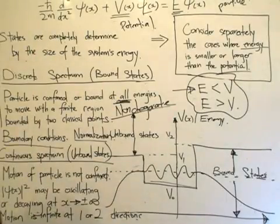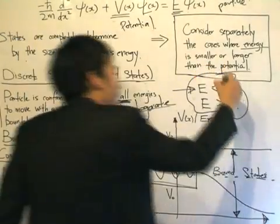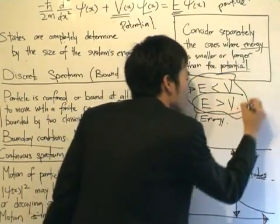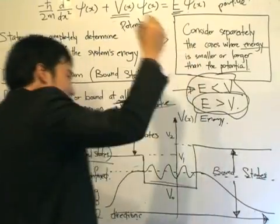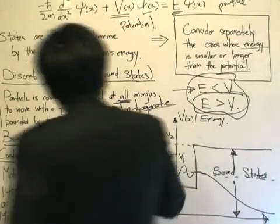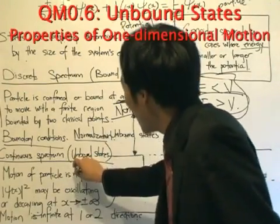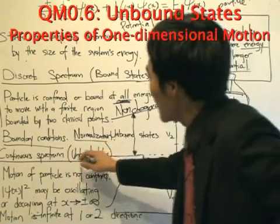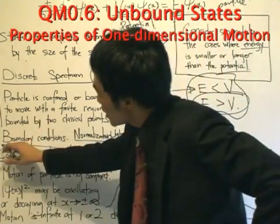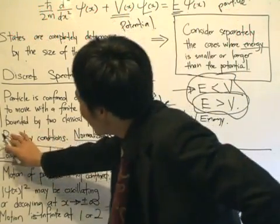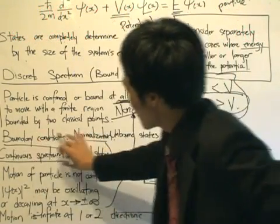Moving swiftly along, we have the case where the energy is more than the potential. When this happens, we will have what we call an unbound state, and the energy values will form a continuous spectrum.